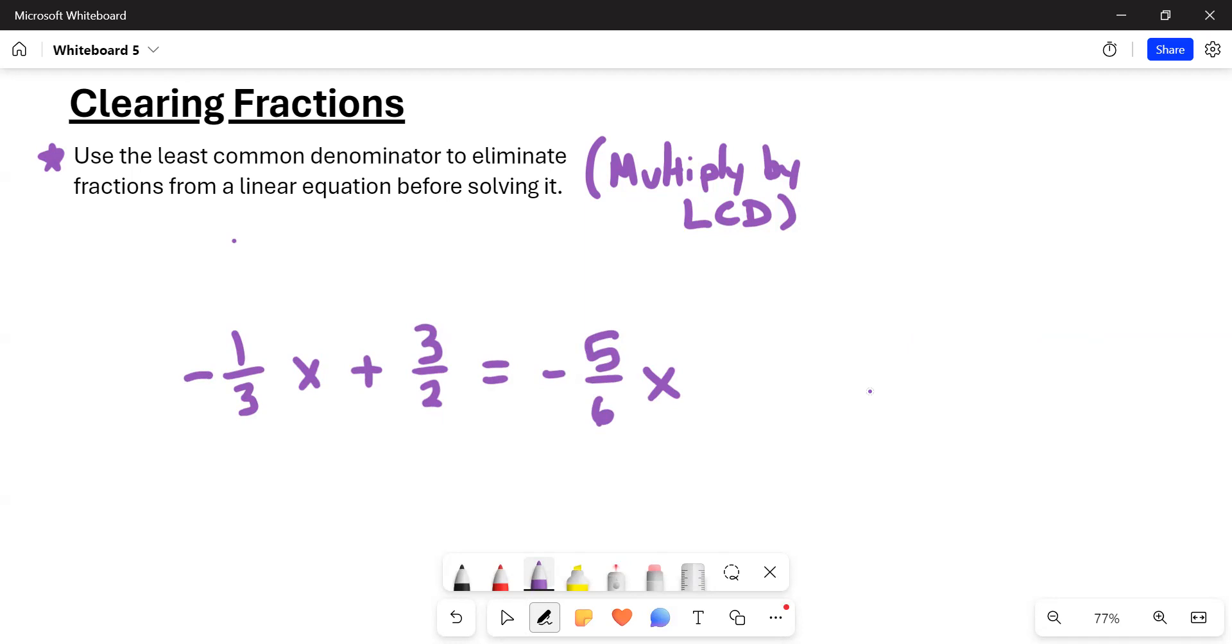If you think about the least common denominator of the denominators, we have three, two, and six. All of those can go into six, or six is a multiple of both three, two, and six. So the least common denominator here is six.